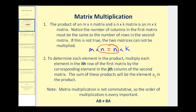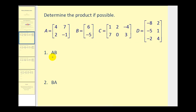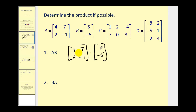Let's go ahead and take a look at an example. If we want to find the product of matrix A and matrix B, let's first determine if it's even possible. The dimensions of matrix A is a two by two and the dimension of matrix B is a two by one. Since the number of columns in matrix A matches the number of rows in matrix B, we can perform the multiplication and the product will be a two by one matrix.